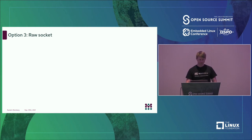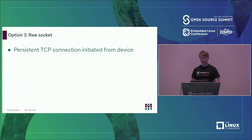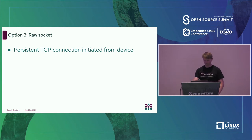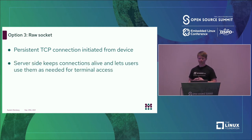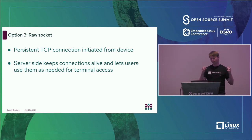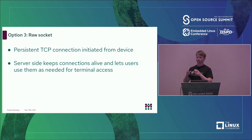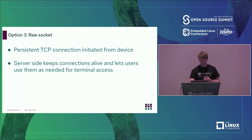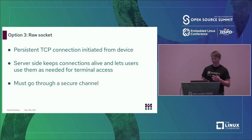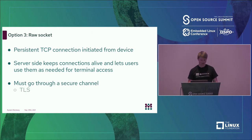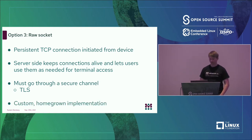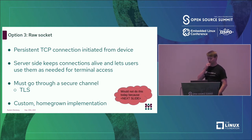The third option is a raw socket. Conceptually quite simple — you develop an application on the device that connects to a server, and the server keeps this connection alive persistently. When somebody wants to use a terminal, it hands off the terminal to this already-open connection to the right device. TCP is not secured natively, so you would use something like TLS for the security requirements. This is a completely homegrown implementation, and there is a better alternative, so I would not use this either.